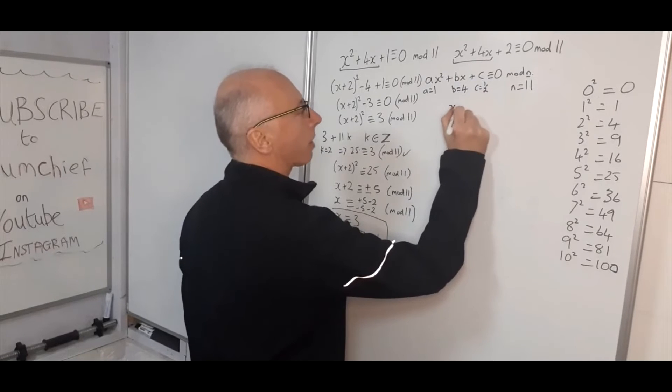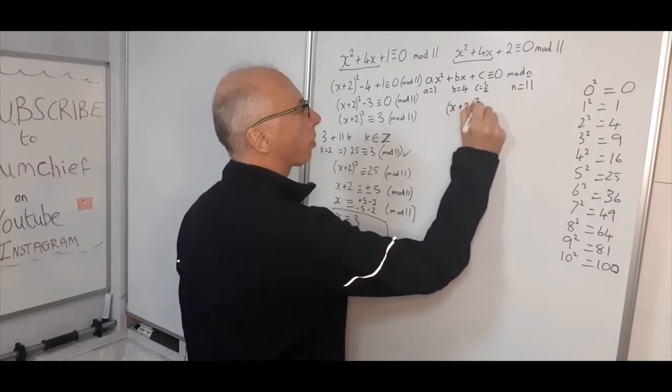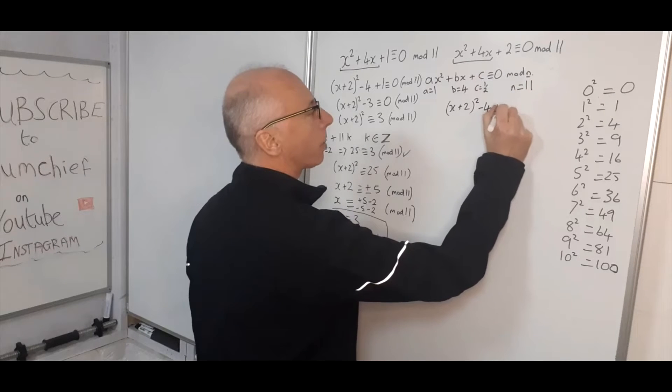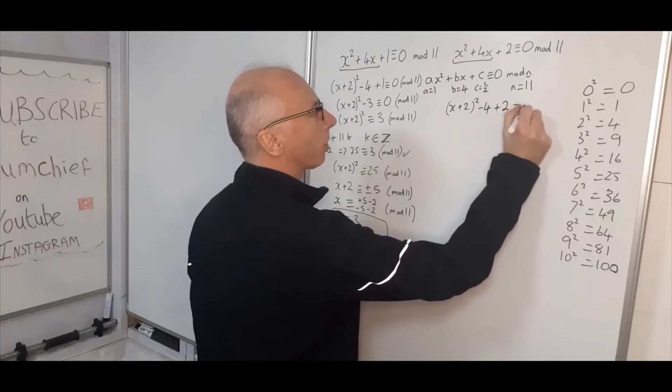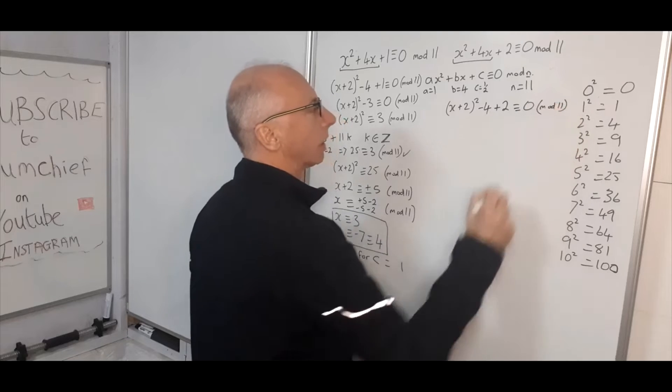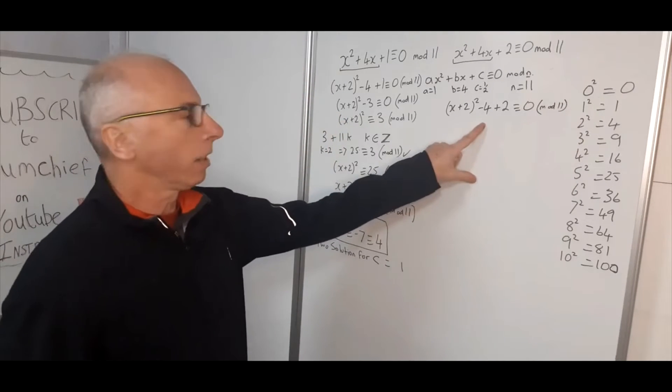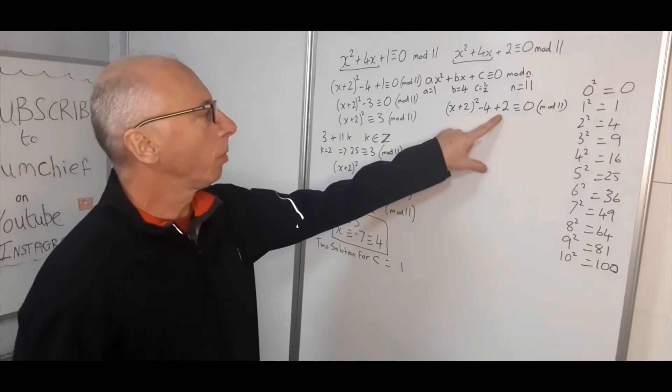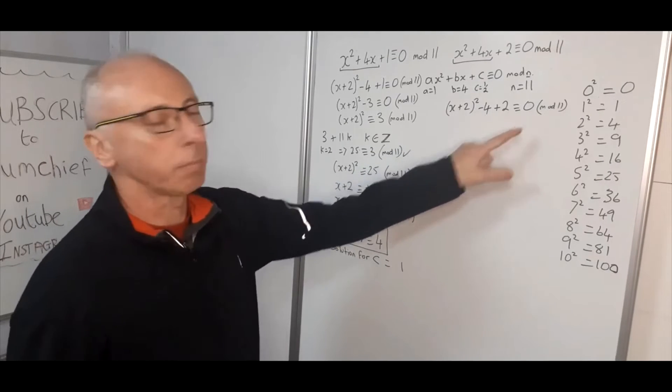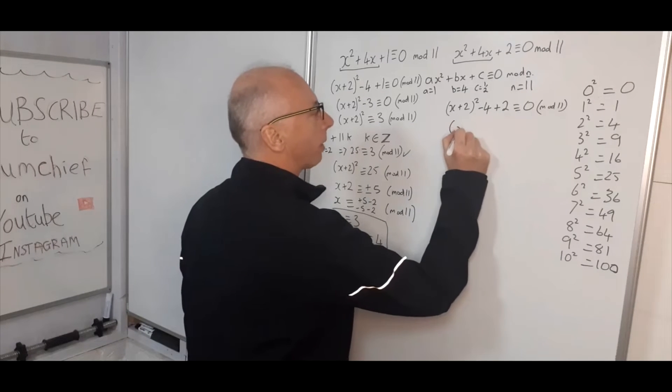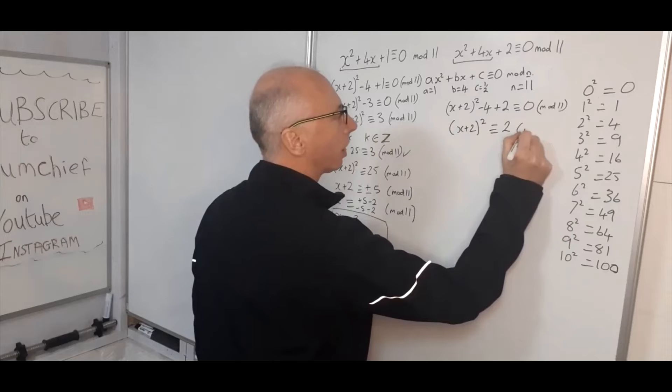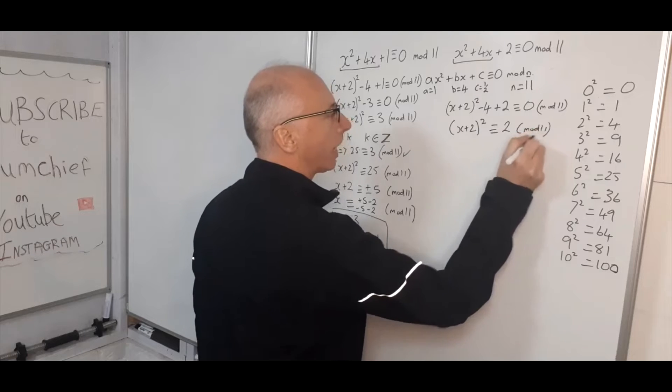So now we've got x plus 2 squared, as we had here, minus 4, this time the c value is 2, it's congruent with 0, mod 11. Okay, so now a quick bit of arithmetic in our head. Minus 4 plus 2, it's minus 2, move to the side, we'll then give us plus 2. So then we get x plus 2 squared is congruent with 2 modulo 11.